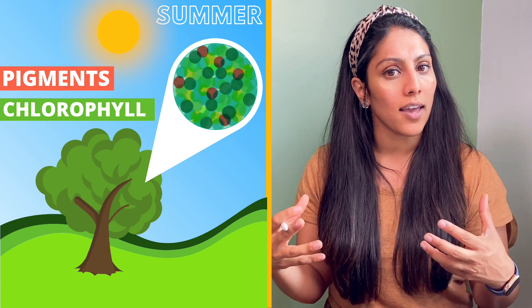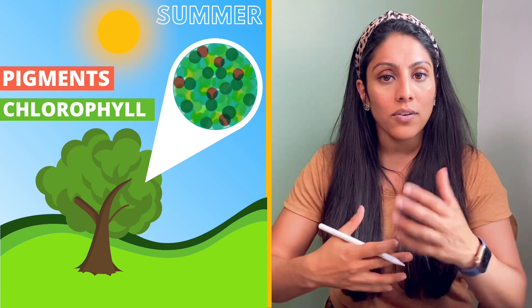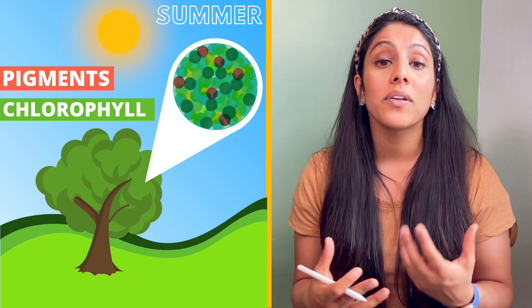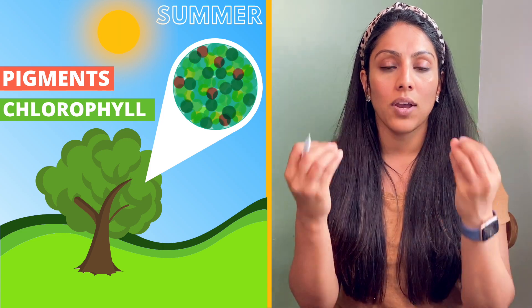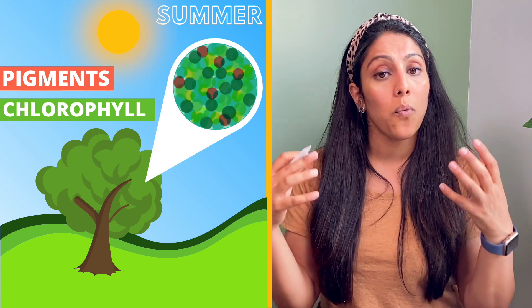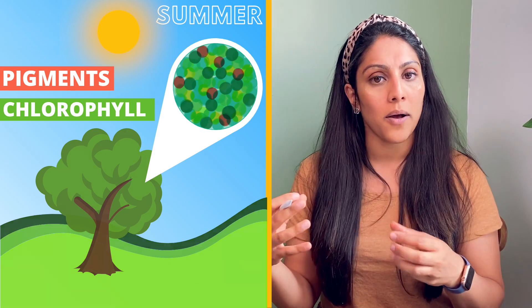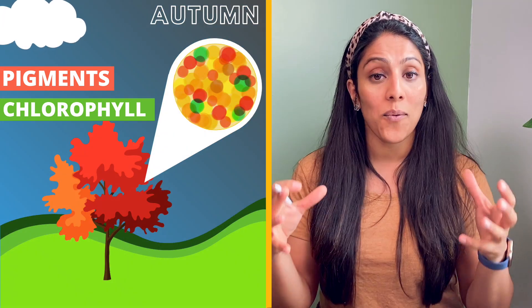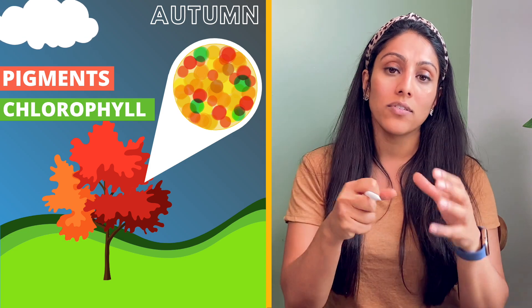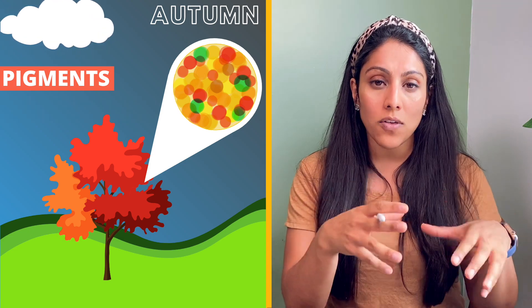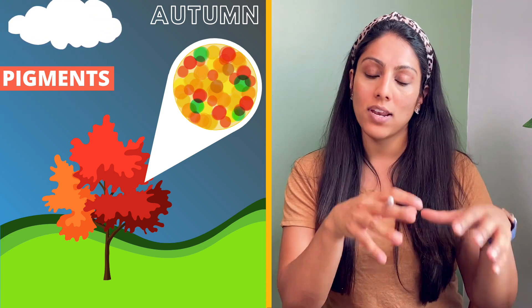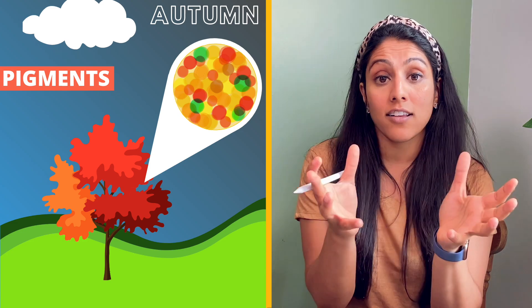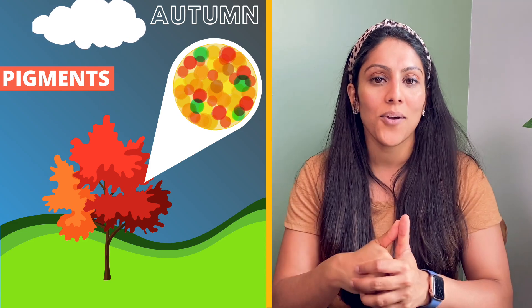When there's a lot of sunlight the chlorophyll is working away, allowing the plant to photosynthesize and creating this green pigment. But when autumn comes there's less sunlight, and when there's less sunlight chlorophyll starts to break down and the other pigments that already exist in the plant start to express their beautiful colours.